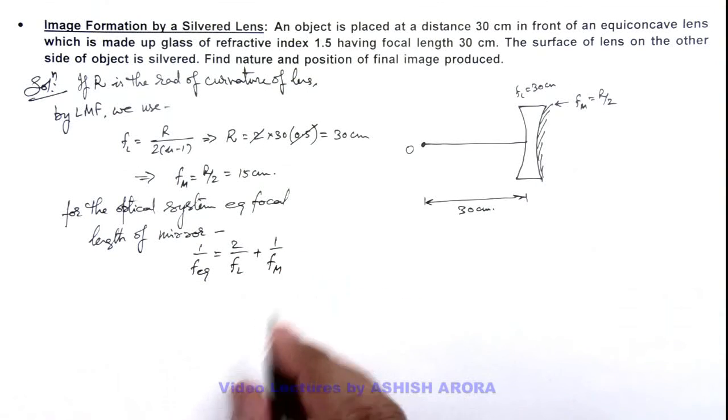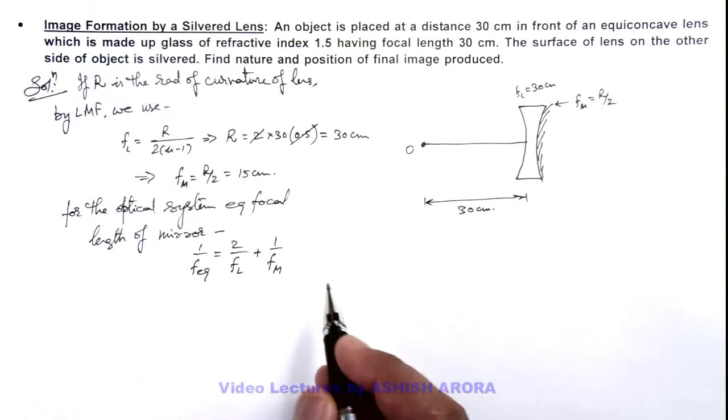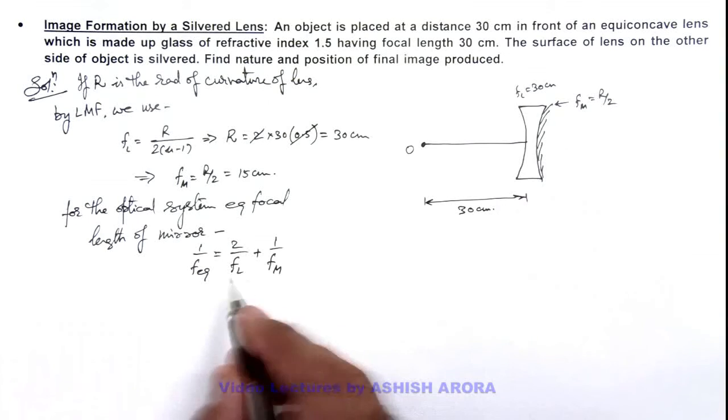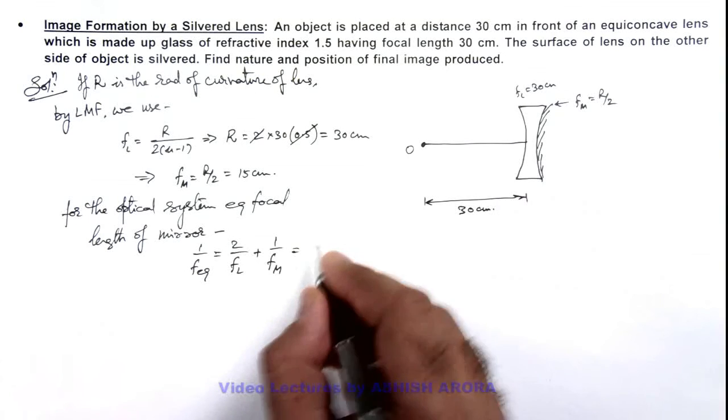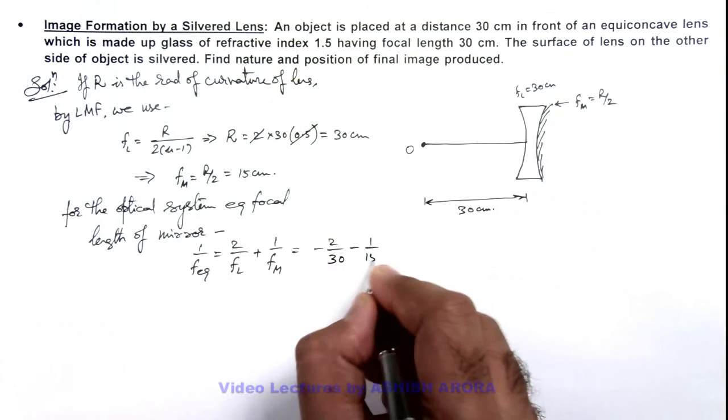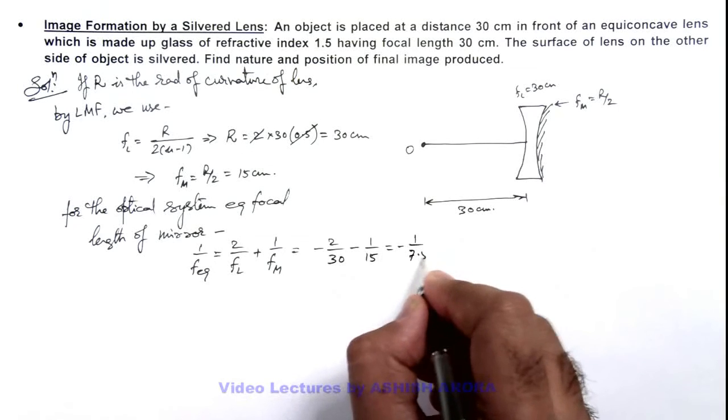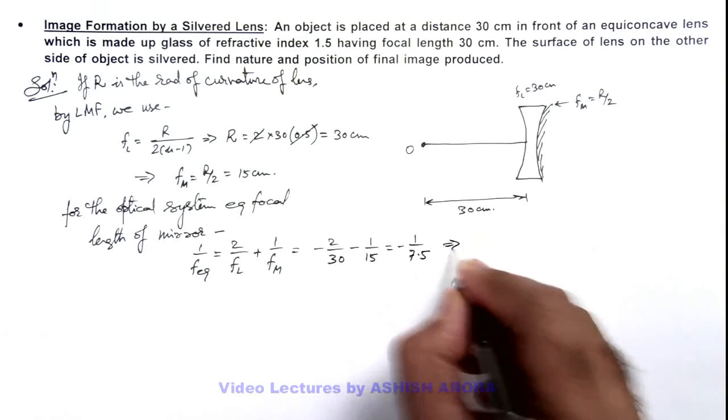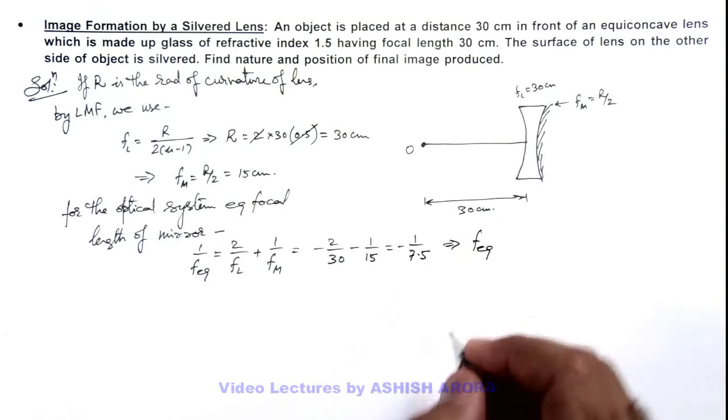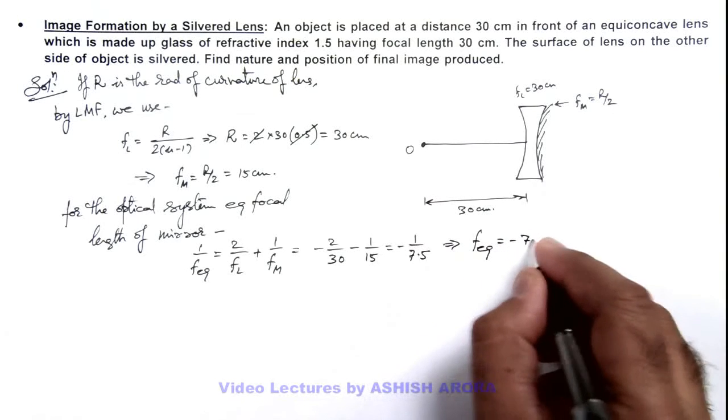And in this situation, both lens and mirror are diverging, so by sign convention we take their focal length as negative. So this will be minus 2 by 30 minus 1 by 15. So the result is minus 1 by 7.5. This implies the equivalent focal length for this equivalent mirror, this optical system, is minus 7.5 centimeter.